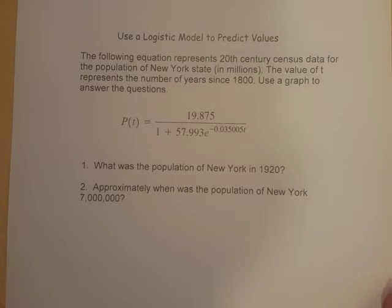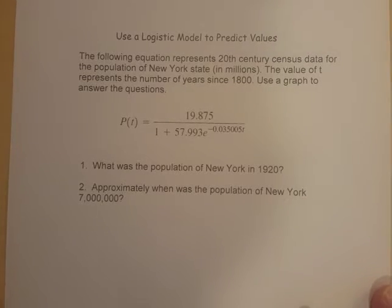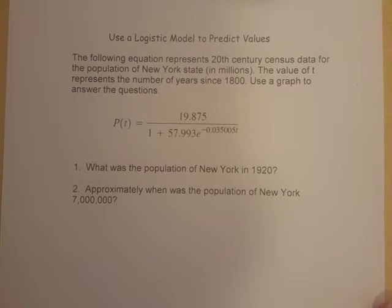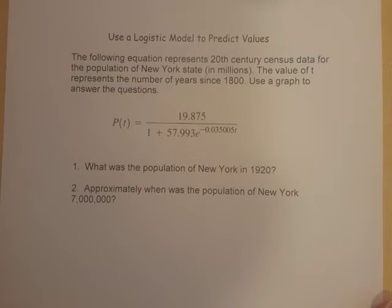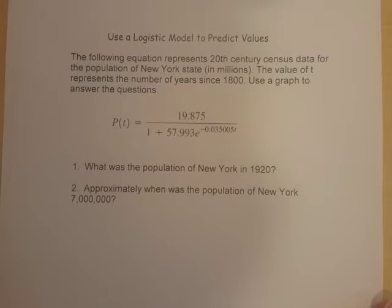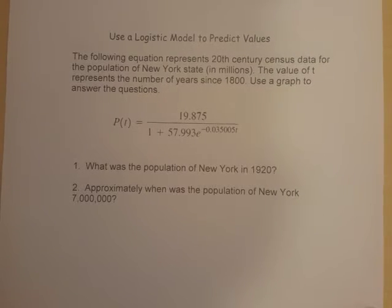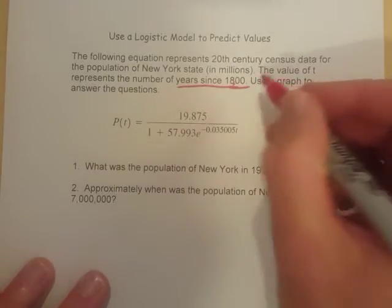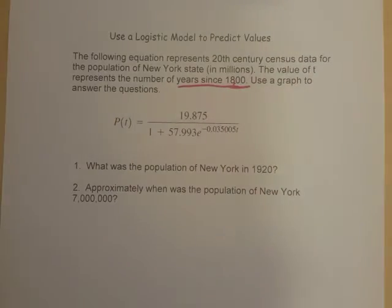It asks us to use the following equation. It represents 20th century census data for the population of New York in millions. The value of t, or x as we're going to use it here, represents the number of years since 1800. That's an important thing to note right off the bat — years since 1800 is what we're looking at. Use the graph to answer the questions.